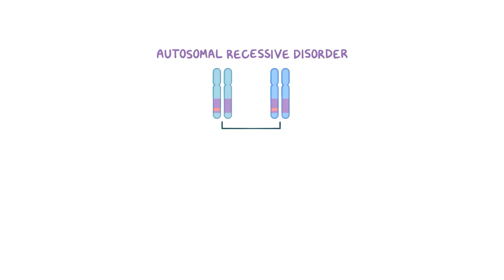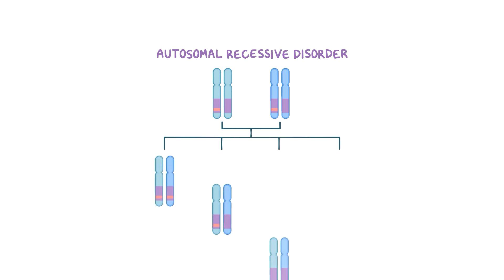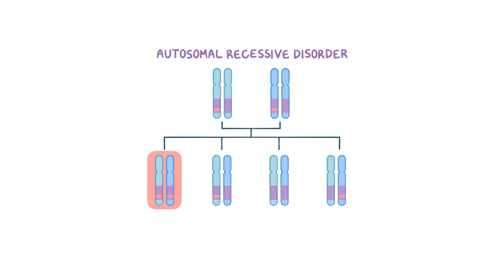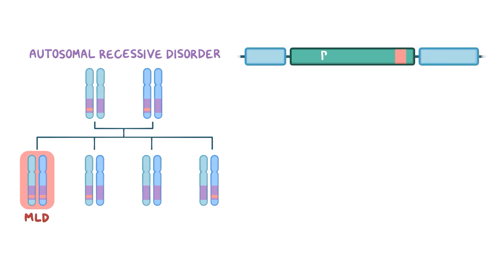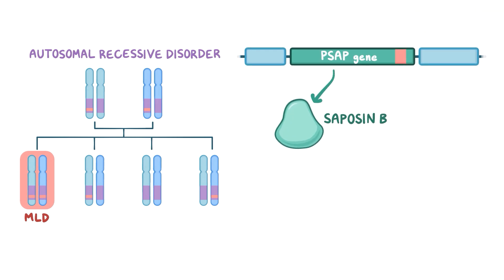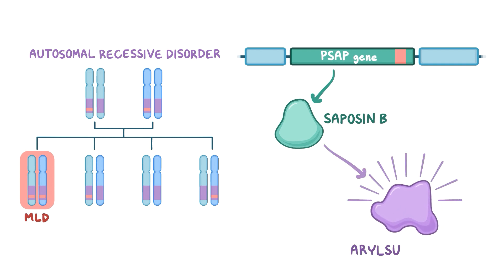MLD is an autosomal recessive disorder, which means that two mutated copies of the gene, one from each parent, are needed to develop the disease. In rare cases, MLD can also be caused by mutations in the PSAP gene, which codes for saposin B, a protein that activates arylsulfatase A.